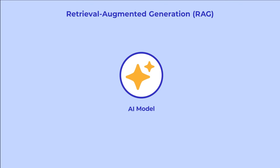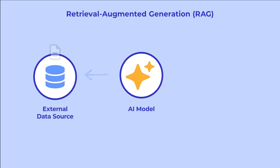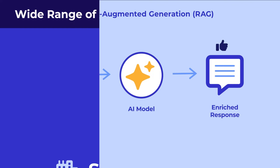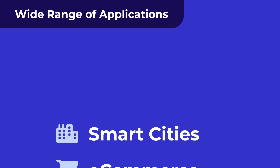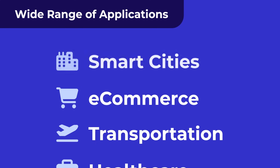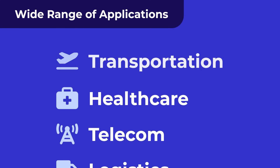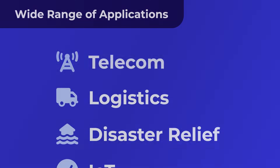RAG involves two key steps. First, the AI queries an external data source to retrieve relevant information. Then, it uses this information to enrich its responses and avoid errors. This approach significantly improves the usefulness of AI responses across a wide range of applications, from smart cities to e-commerce.